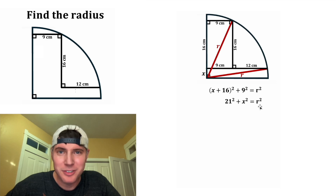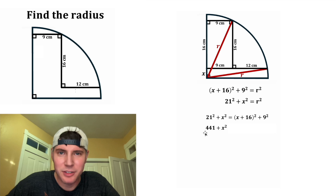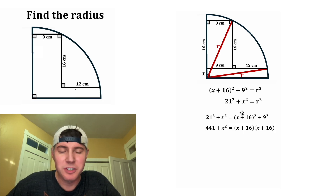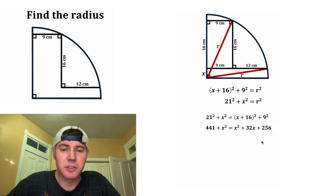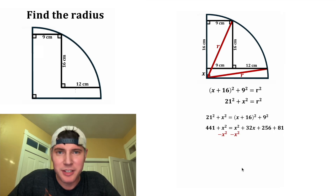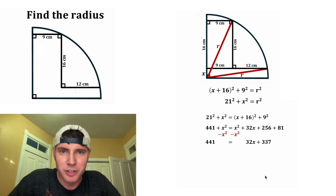Now we have two equations with two variables, so let's solve. Both expressions are equal to R², so we can set them equal to each other. On the left-hand side, 21² = 441, and we bring down the X². On the right-hand side, (X + 16)² expands to X² + 32X + 256, and 9² = 81. Next, let's subtract X² from both sides. We have 441 on the left, and 32X on the right. 256 + 81 = 337.